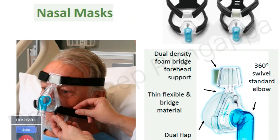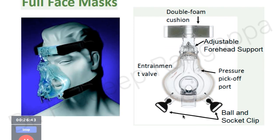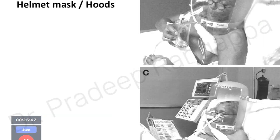There are different types of masks including nasal masks. Key mask features: the connector should have 360-degree swivel so tube kinking doesn't hamper gas delivery; foam bridges to prevent nasal bruises from high-pressure NIV; and the cushion should be thin, flexible, and dual-flap. The helmet mask or hood is more comfortable, reduces claustrophobia, and allows the patient to see. These are some features of the various NIV masks available.